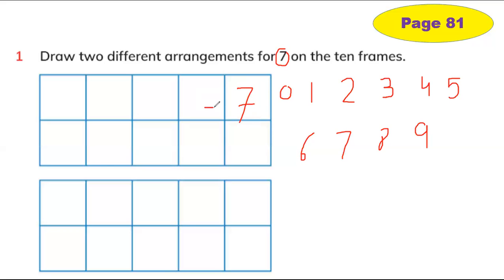We need two numbers that make seven. So let's find out. I'm going to write: one plus — take another number that can add with one to make seven — I'm going to take six. So one plus six equals seven. In this way you can add different numbers.